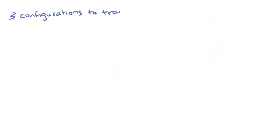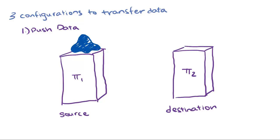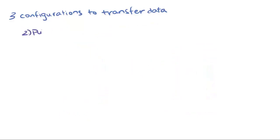There are three configurations to transfer data using the Pi2Pi interface. The first one is where we push data from the source PI server onto the destination PI server, and the Pi2Pi interface is located on the source. This allows us to use the PI buffer subsystem to buffer data to the source PI server.